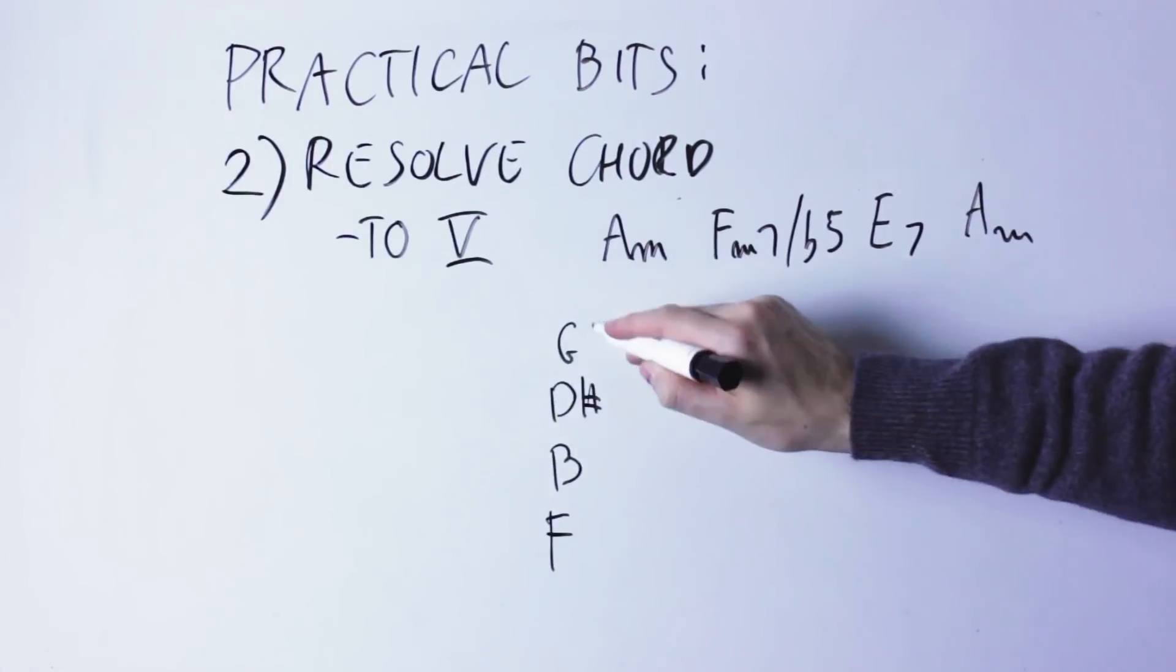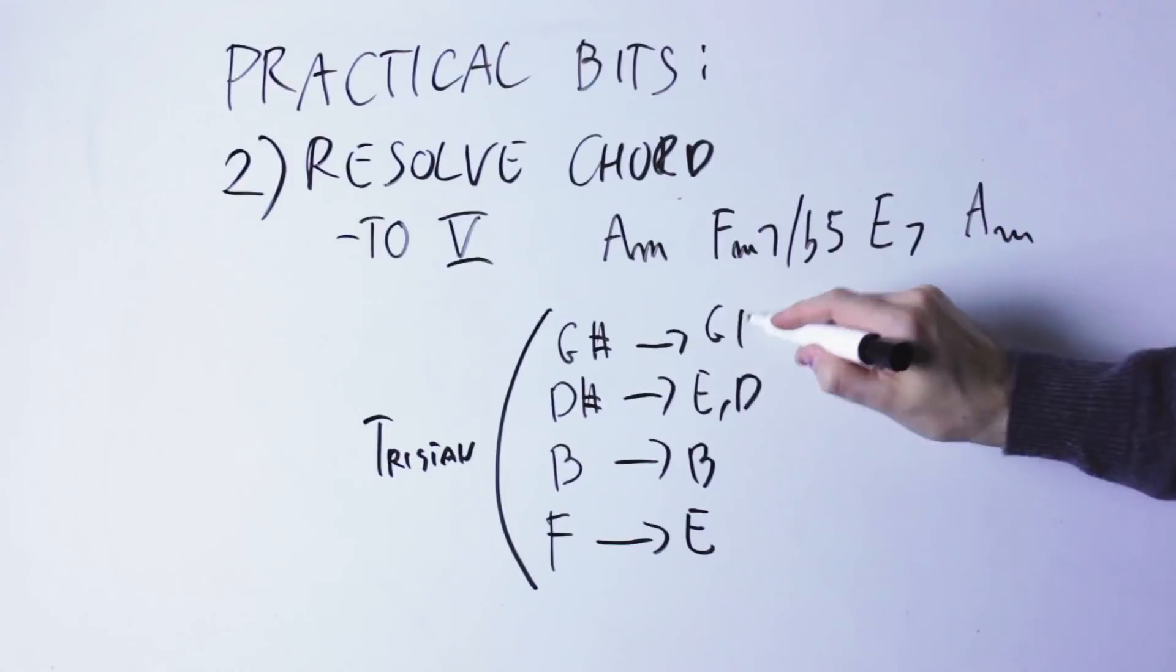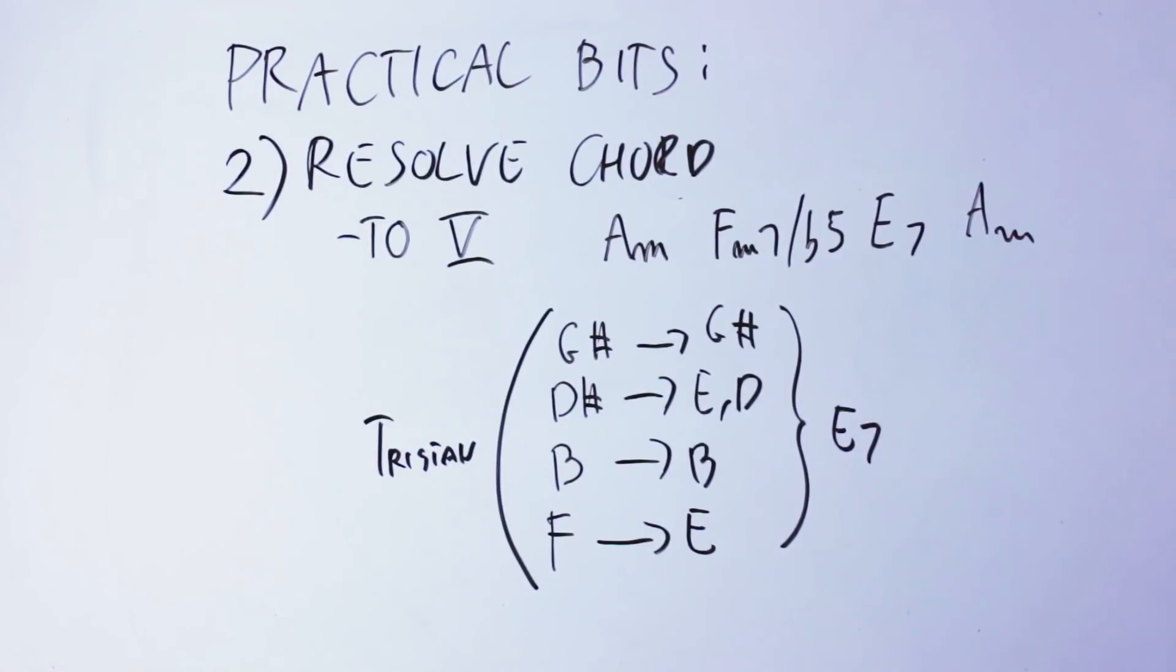The notes move this way. The F goes down to the E, B stays stationary, D sharp can go up to E or down to D, which is the seventh of E7, and G sharp stays where it is.